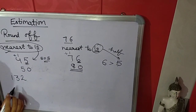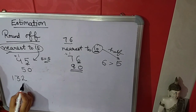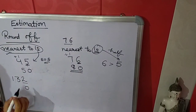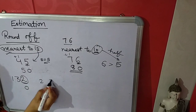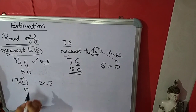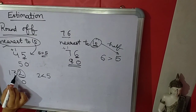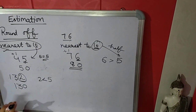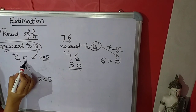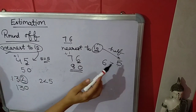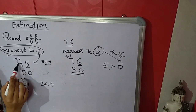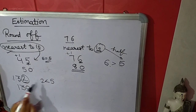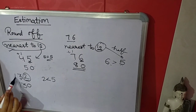Taking another number: 132. We have to estimate nearest to 10. Again there is 1 zero, so we convert the last digit to 0. Now we compare this 2 to 5. Since 2 is less than 5, we will not add 1. The 3 and 1 will come the same, so the answer is 130. Simple rule: if the last digit is greater than or equal to 5, add 1 to the next number; if less than 5, all numbers come the same.